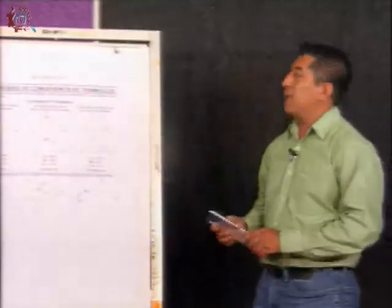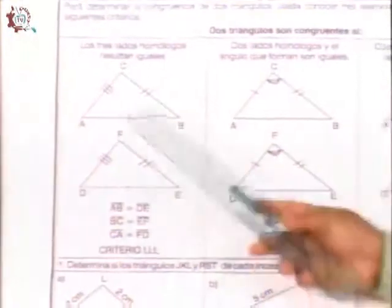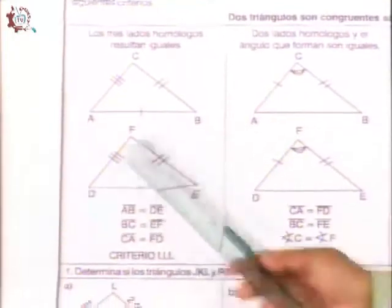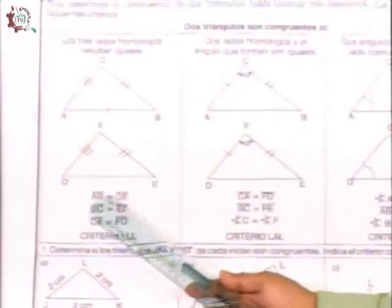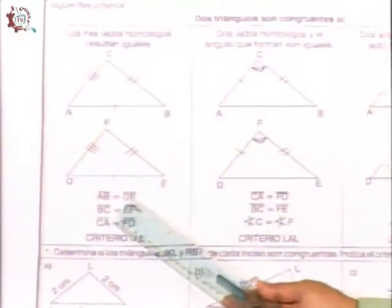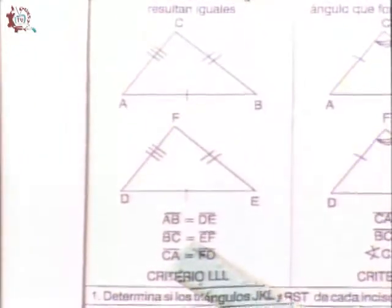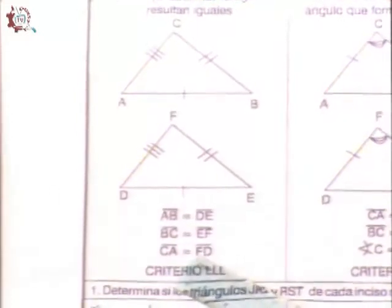¿Cómo puedo darme cuenta o de qué forma si son iguales? Tenemos aquí un ejemplo donde tenemos el triángulo A, B, C, señalándome cada uno de sus lados. A su vez, un triángulo D, E, F que también me señala los lados. Simplemente es para ejemplificar que el segmento AB debe ser igual al segmento DE. A su vez, el segmento BC tiene que ser igual a EF. El segmento CA debe ser igual al segmento FD.